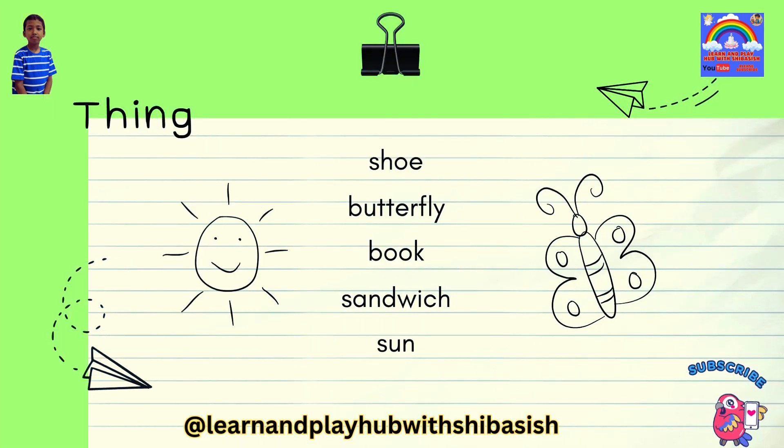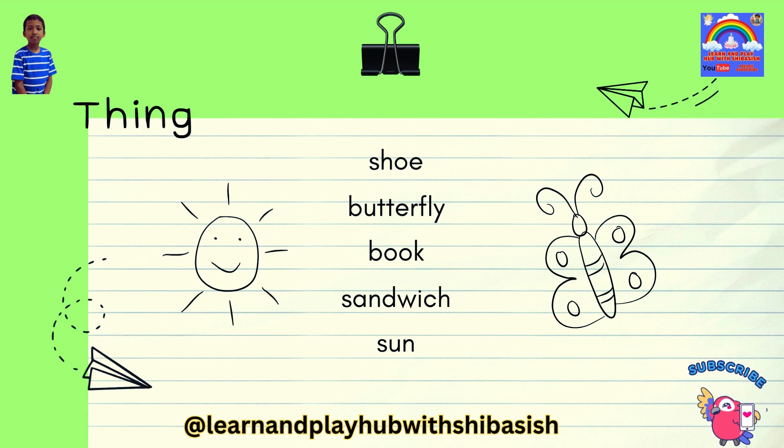A noun can be a thing. Examples of thing nouns: shoe, butterfly, book, sandwich, sun.